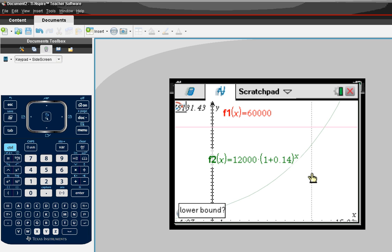So lower bound, I'm going to click on the left. Upper bound, click on the right. And here I can see 12.3 comma, whoops, come back. 6e plus 4.